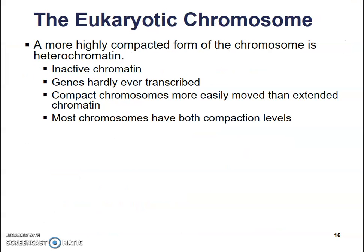A more highly compacted form of the chromosome is heterochromatin. It's inactive — this is DNA that does not have directions that are needed frequently. These are genes that hardly ever get copied over into RNA, and they are much more easily moved than the extended chromatin.